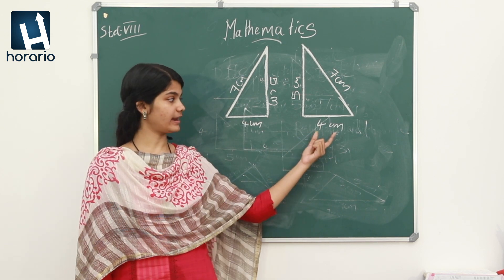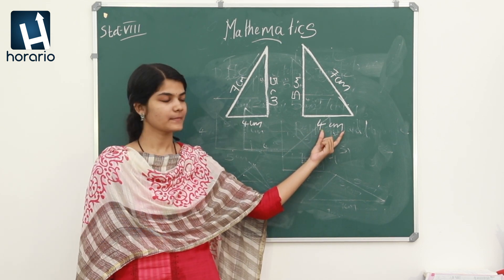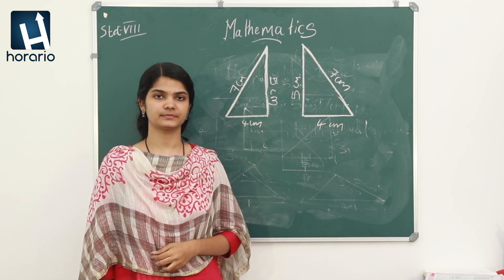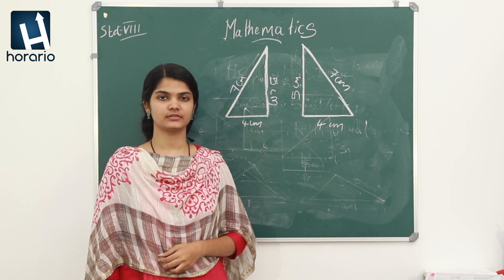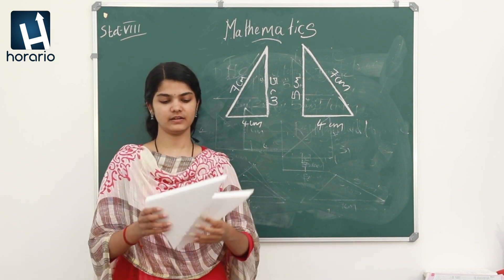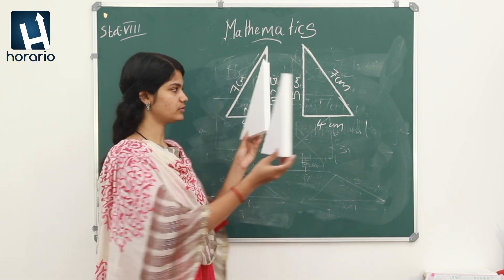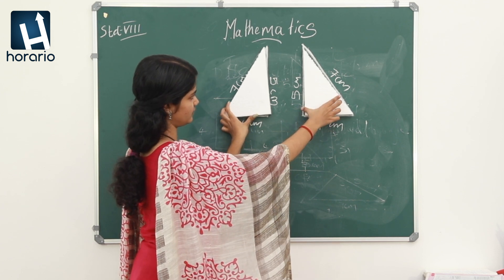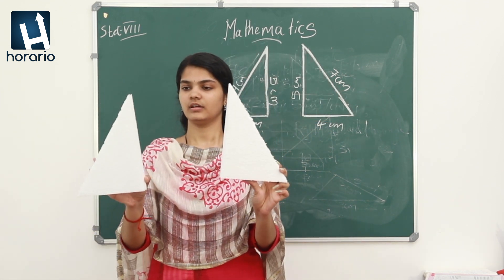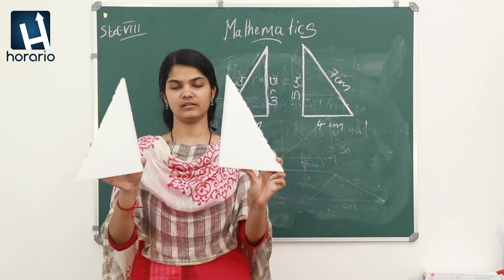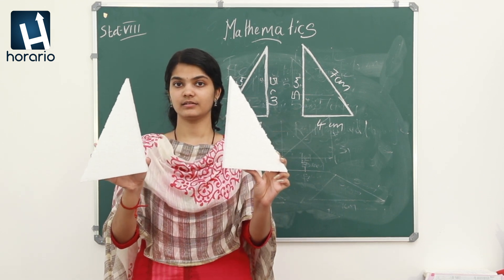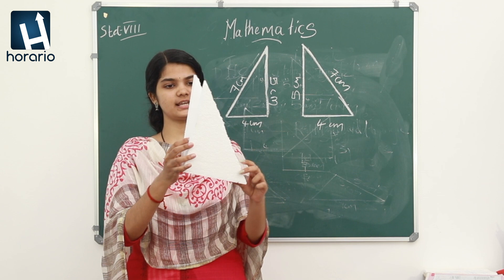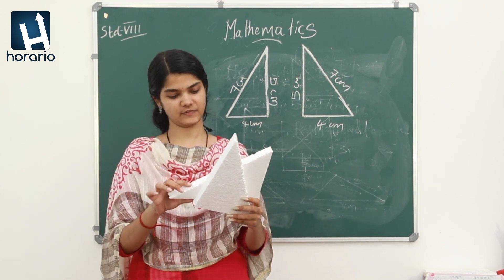Now we are considering triangles with base 4 centimetres. We need to cut out these two triangles on thick paper. Then we will get two triangles like this. These two triangles are equal triangles. Why? Because their sides are equal. We can verify this by coinciding them — let's coincide. I am flipping. These two triangles coincide each other, so we can say the triangles are equal.